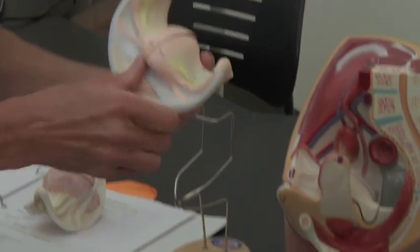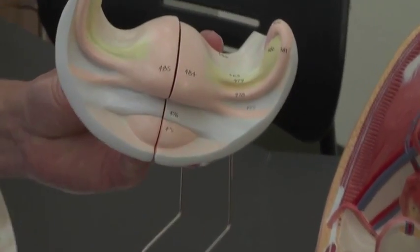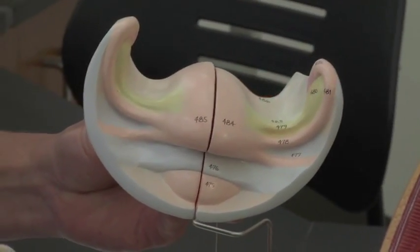Start first with the ovaries. These are these little yellow ball-shaped organs right here. That's where the ova or the eggs are formed in the female.